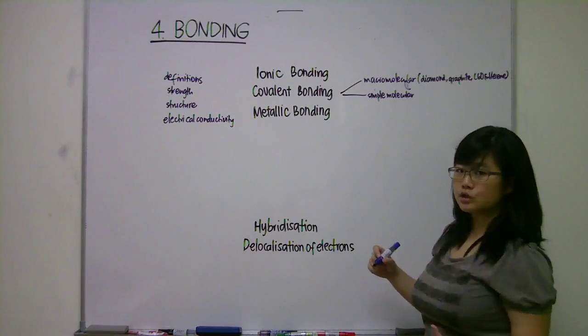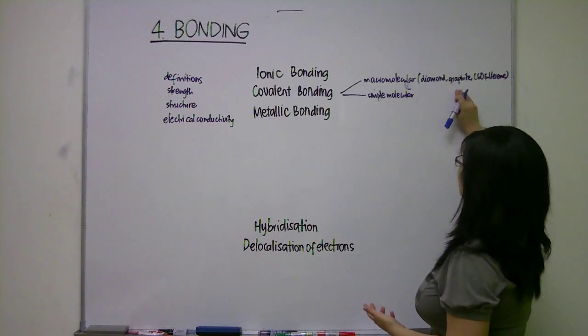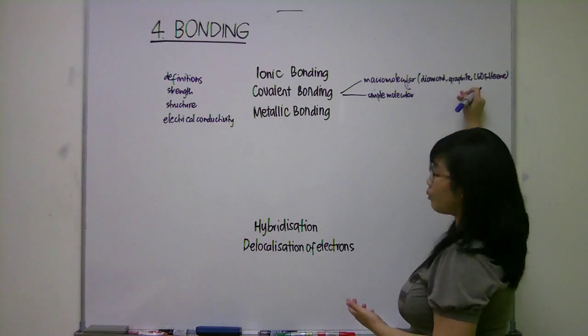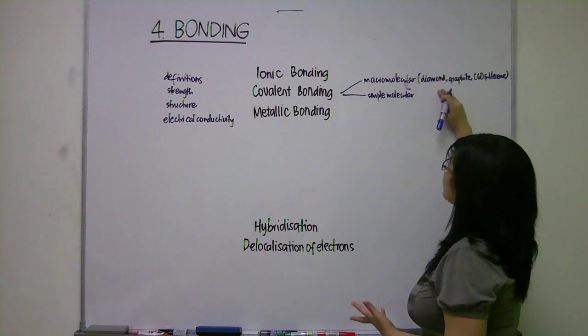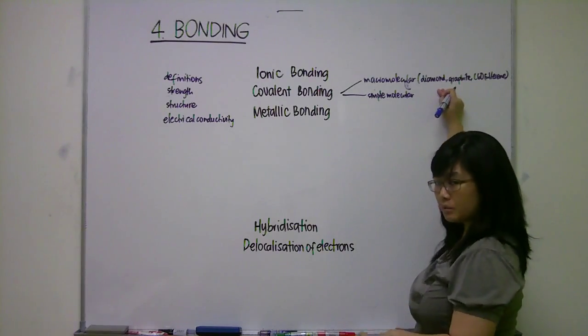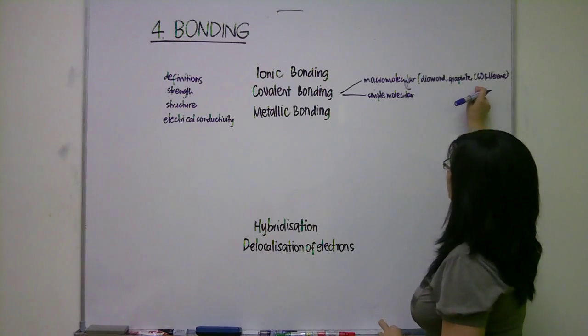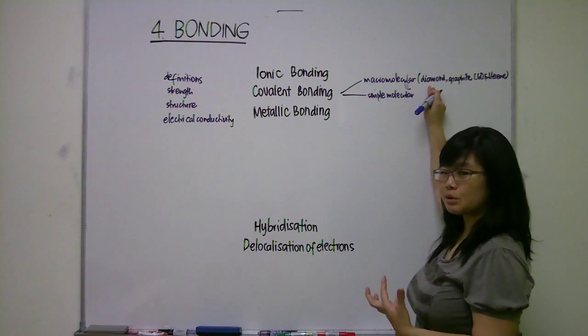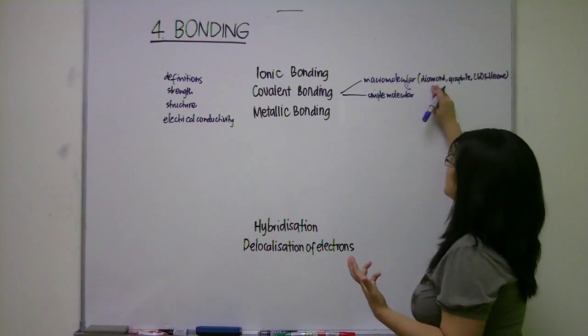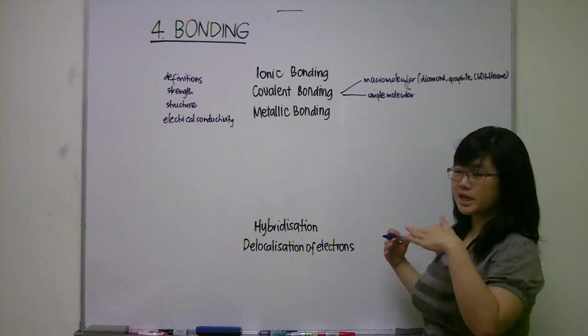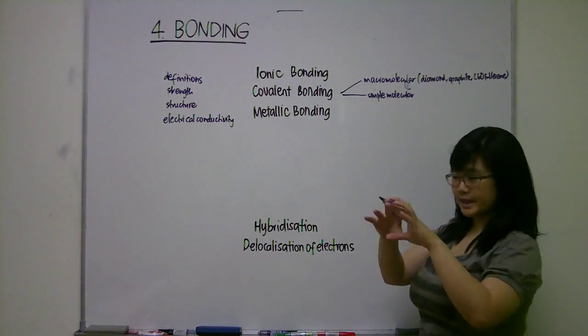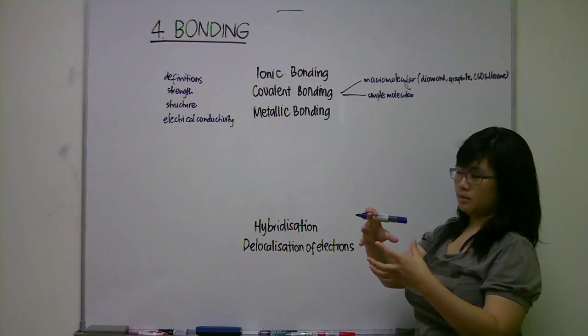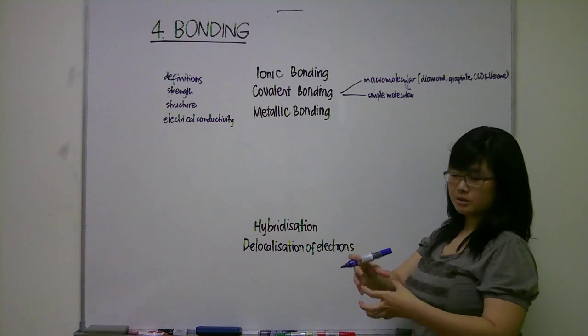You're going to teach your students the differences between the three types. Although they are all macromolecular, they all have covalent bonding within the molecule. You're going to be explaining the differences in the structure between them. For example, diamond is a 3D lattice, graphite is layered structure, and C60-fullerene is molecular.